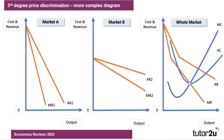If you add those two demand curves together, you kind of get a quirky, kinky demand curve — not the kinked demand curve. Of course, you've got a section of demand where demand is inelastic, and then you bring in a bit more price elastic demand. So you get a little quirky AR and MR diagram there in the whole market. Now, if the firm was just to profit maximise with one price, that would be where marginal cost meets marginal revenue — Q1. And that would allow them to sell at a price of P1 with a unit cost of C1 and make a supernormal profit shown.